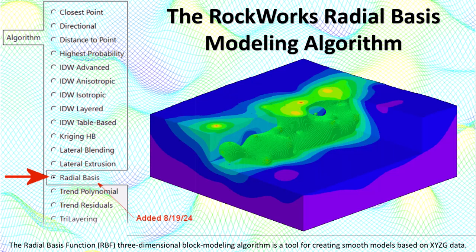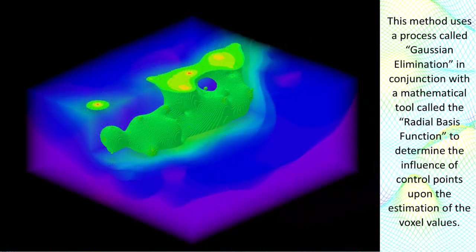The radial basis function, or RBF, three-dimensional block modeling algorithm is a tool for creating smooth models based on XYZG data. This method uses a process called Gaussian elimination in conjunction with a mathematical tool called the radial basis function to determine the influence of control points upon the estimation of the voxel values.